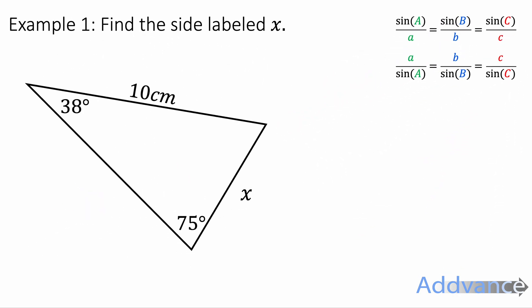Let's look at an example. This is definitely a sine rule question because we've got the 10 centimetres and 75 degrees — they are a side and an opposite angle already labelled. And then we've also got one more measurement, and that's the 38 degrees. So we can use the sine rule to find the missing length.